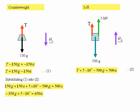Transposing that in a couple of steps, we get the expression for the acceleration, which is 5 times 10 to the power 3 minus 350G, divided by 650. That works out as 2.4 meters per second squared.